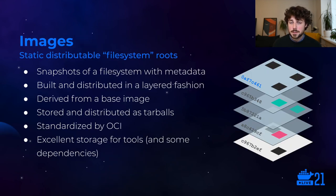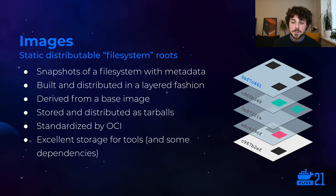The first thing is images — probably the most visible aspect of container file systems. They're just snapshots of a container root file system with associated metadata like entry point information. They're built and distributed in a layered fashion — each layer is derived from a base image and contains only the deltified changes relative to that base image, like file changes, deletions, or creations. Each of these layers is stored and distributed as a tar.gz file — a standardized format. They're an excellent storage location for tools and static dependencies that your team uses.